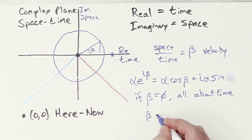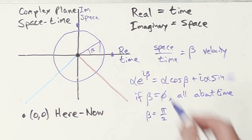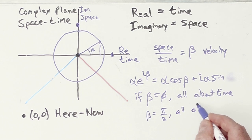Whereas, if beta equals pi over two, then we're talking about this sort of thing, then it's all about the spatial difference, all about space.